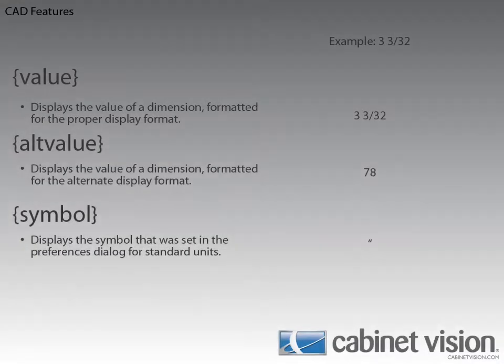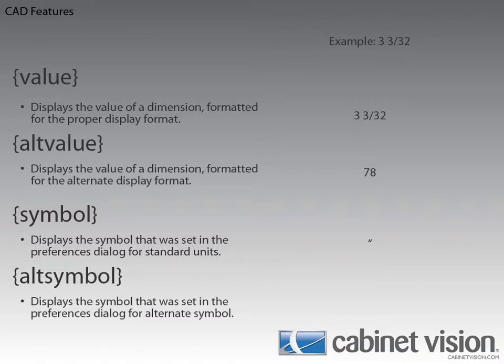Since we have a value variable and an ALT value variable, it only makes sense to give you an ALT symbol variable. Because we're working in Imperial units and I haven't changed the default symbol for metric units, this variable will display the MM symbol.